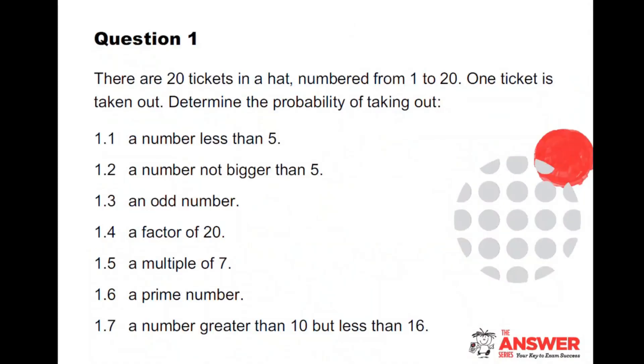So you don't want to trick them with a language problem. You actually want to test their probability, so you do need to tell them if aces are high or low. Let's have a look at the first question. There are 20 tickets in a hat, numbered one to 20. One ticket is taken out. Determine the probability of taking out. And grade 10s, whether they've done it during COVID or not, I still would do this with my grade 10s, just to check, because you'll notice a whole lot of words here.